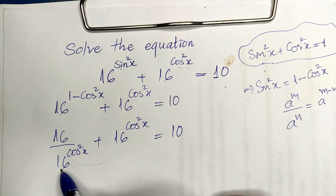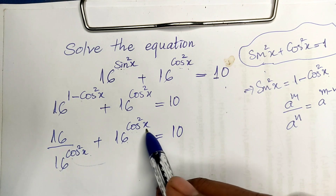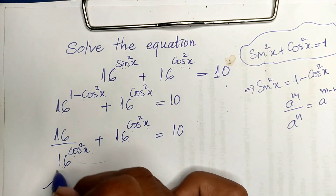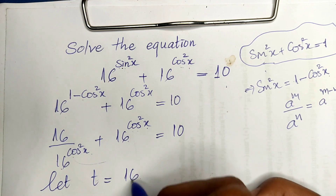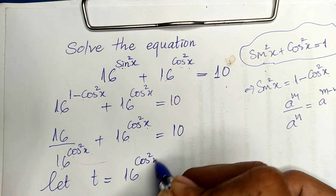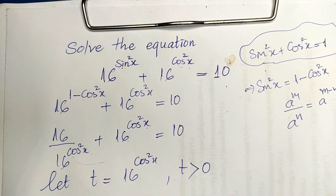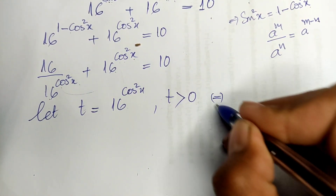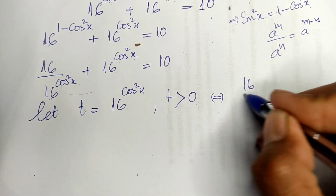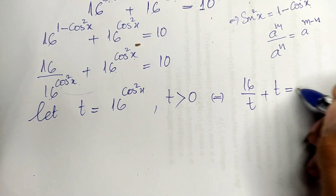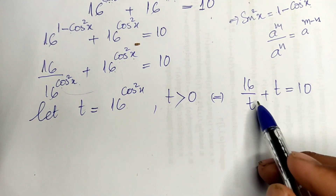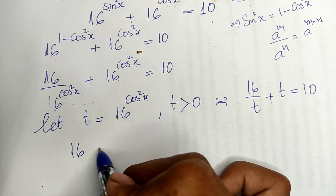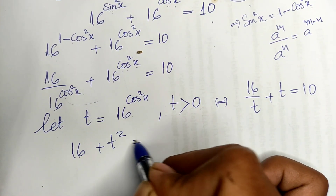We notice there are two occurrences of 16 to the power cosine squared of h. So let t equal 16 to the power cosine squared of h, where t is a positive number. Now we get the equation in terms of t: 16 divided by t, plus t, equals 10. Multiplying both sides by t, we get 16 plus t squared equals 10t.